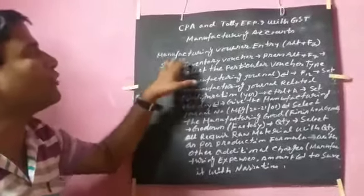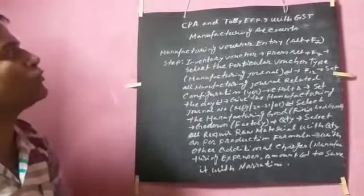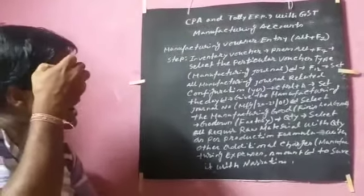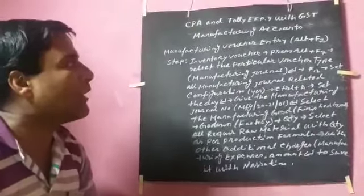So today's lesson is the manufacturing voucher entry. How can we build this voucher entry?